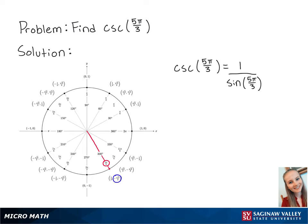So 1 over sine of 5π/3 is equal to 1 over negative √3/2. If we simplify this, we will get -2/√3.